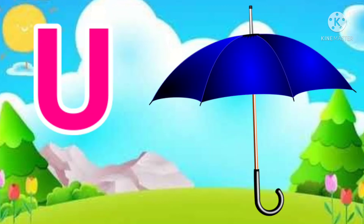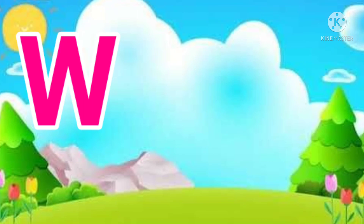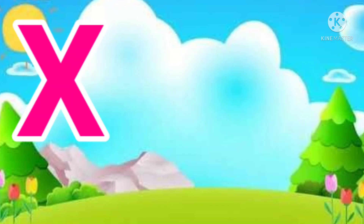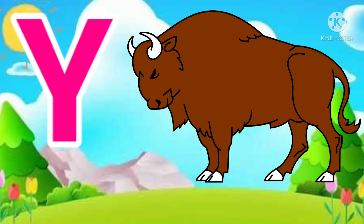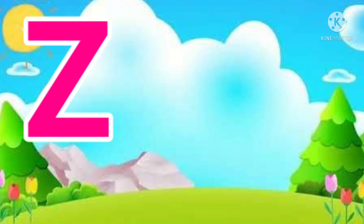U for umbrella, B for vulture, W for watermelon, X for ice tree, Y for yuck, Z for zebra.